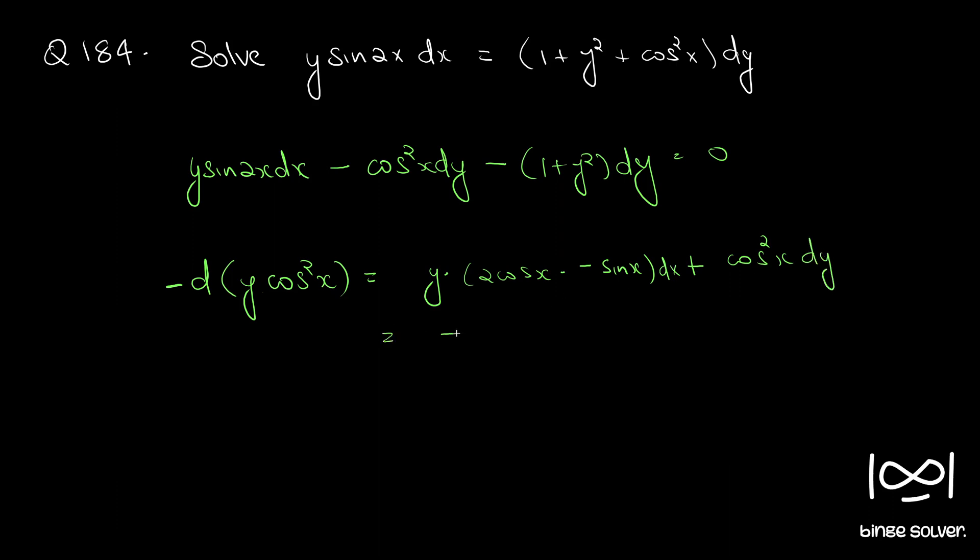This becomes minus 2, y into 2, 2 cos x sin x can be written as sin 2x. So, this becomes minus y sin 2x plus dx plus cos square x dy. So, we have this here. So, it is negative of this. So, once you solve many problems, you can easily, once you see this itself, you will be able to identify, it is the differential of y cos square x.